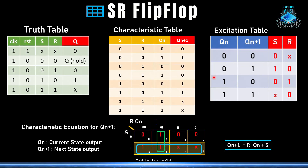Now looking at the SR flip-flop truth table: when S=0, R=0, it holds its output value. When S=0, R=1, the output will be 0 (reset). When S=1, R=0, it sets the output to 1. When both S=1 and R=1, it is an indeterminate or forbidden state, which we consider as X.